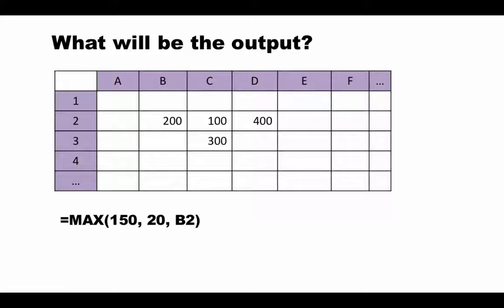So you're saying max 150, 20, b2. Of course the result is going to be 200 because 150 and 20 are direct values we have given but b2 contains the value 200. So we are now effectively saying maximum of 150, 20 and 200, of course the result is 200.